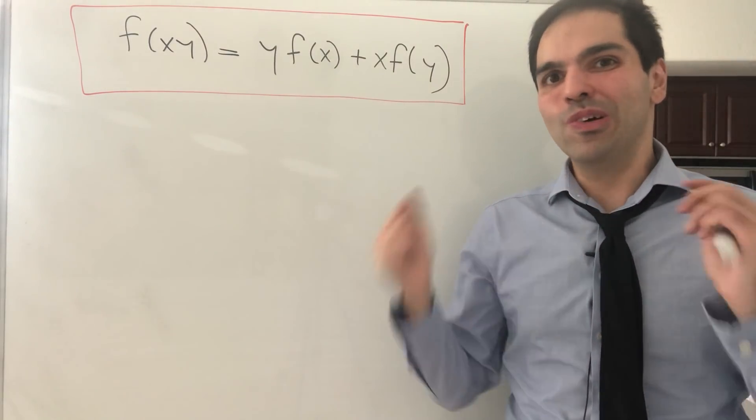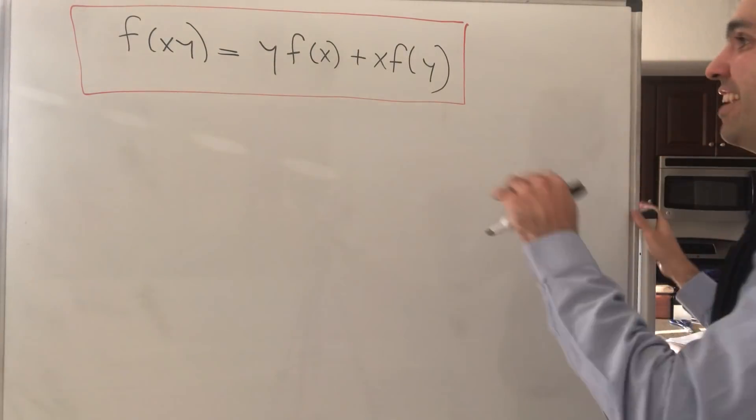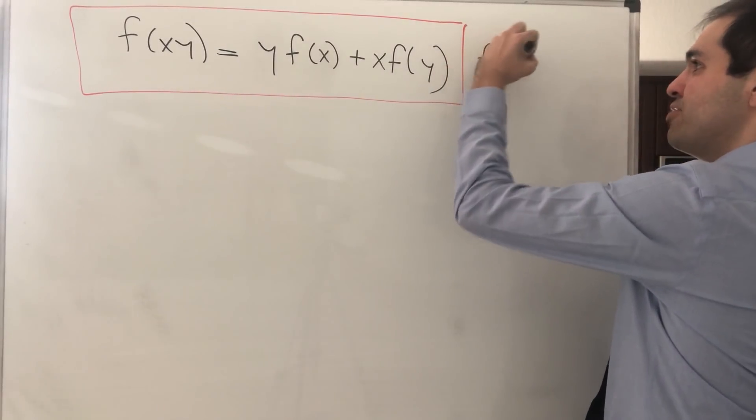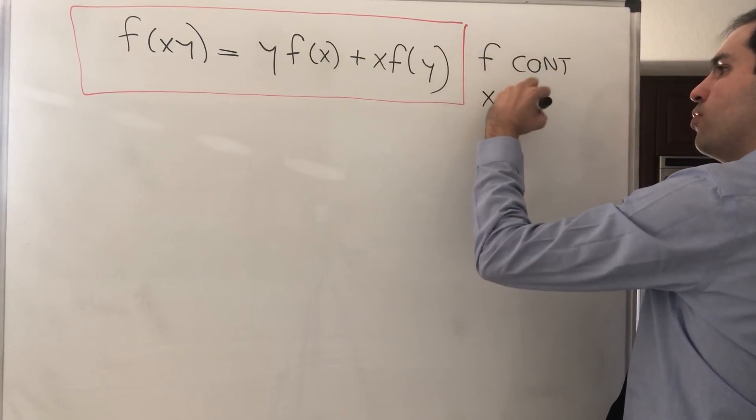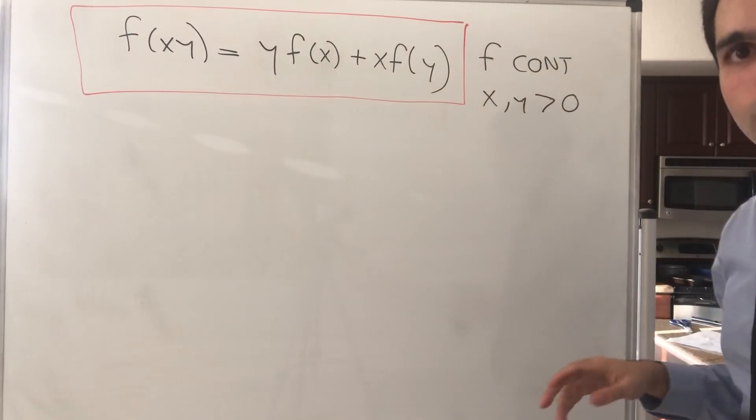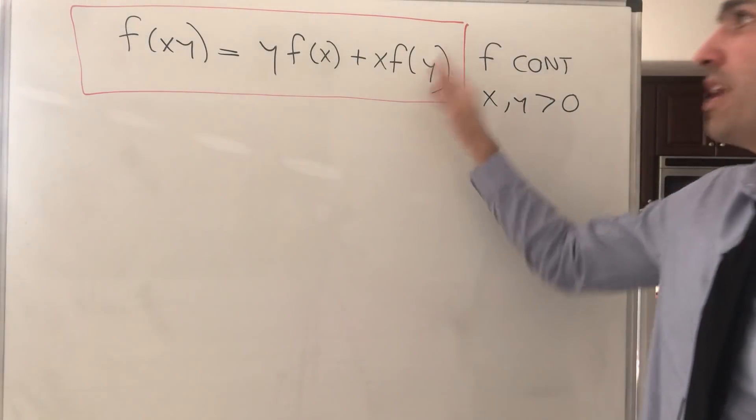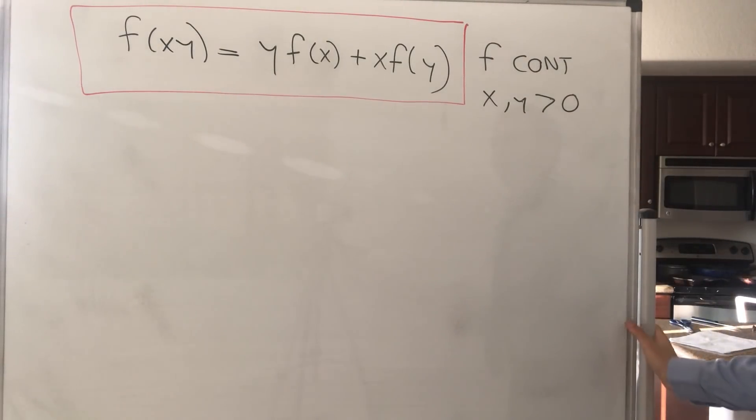So it's kind of like a product rule for functions. Just to emphasize, we assume f is continuous and x and y are positive to make things easier. Otherwise, replace it by absolute values, which should be fine.